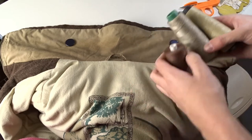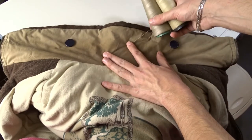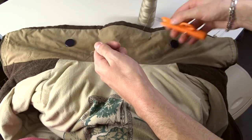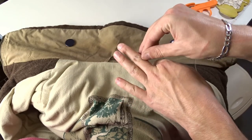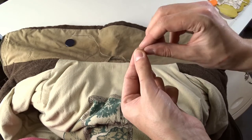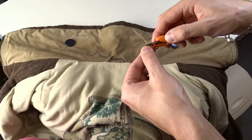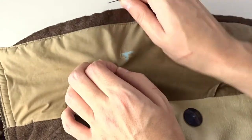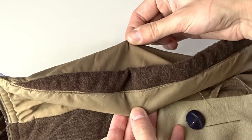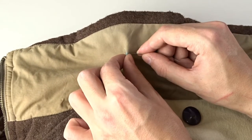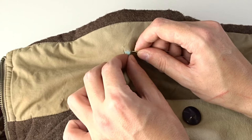Take a needle and choose a matching color thread. Pass the needle only through the top layer of fabric so that the stitches won't be visible from the back side of the collar. Then start sewing the button.